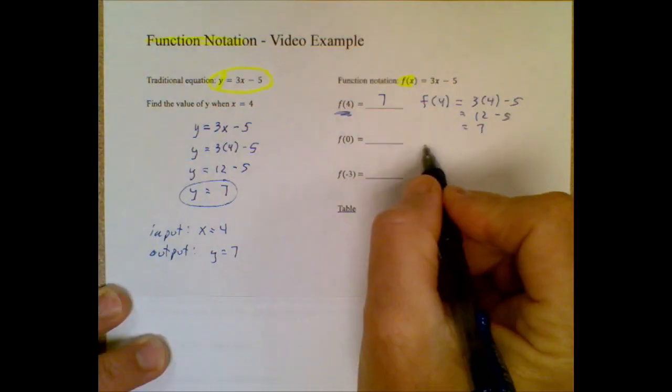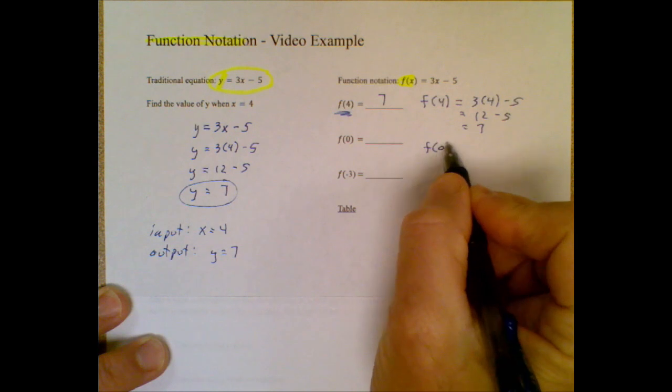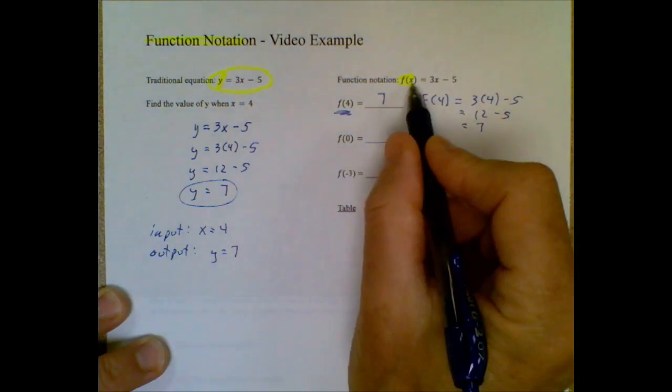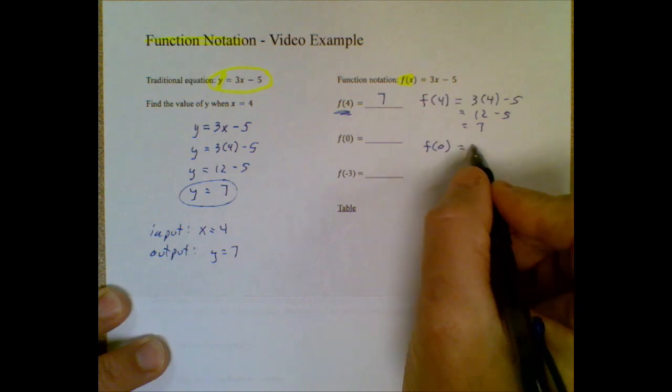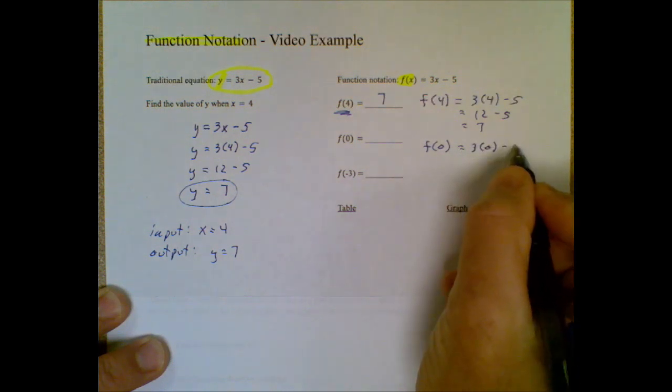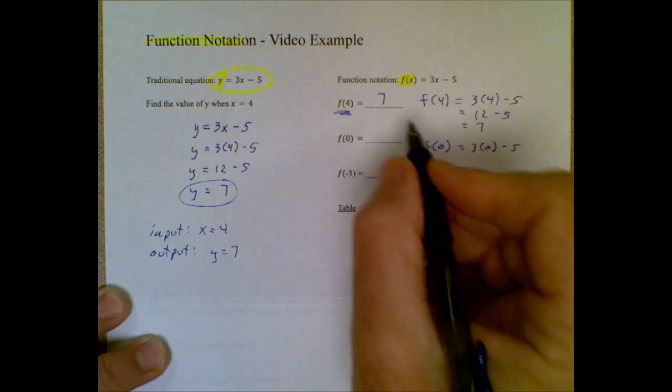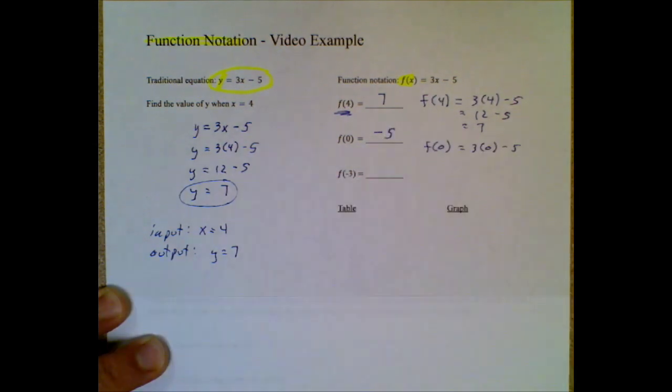If I were going to do f of 0, here we are at f of 0. That means plug in a 0 for x, so I get 3 times 0 minus 5. If I do a little mental math, that's a 0 minus 5. That means my output or the result of the math is a negative 5.